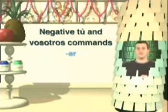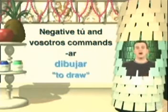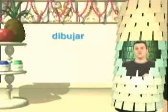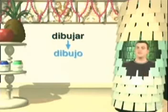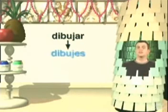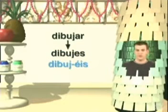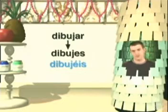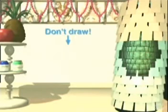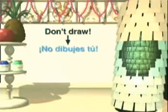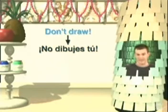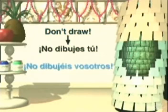Here's how you make negative tú and vosotros commands. We'll start with AR verbs, using dibujar, which means to draw. First we take the yo form: dibujo. Then we knock off the O. Lastly we add ES for the singular form: dibujes, and an accented ÉIS for the plural form: dibujéis. So to tell someone not to draw, you'd say no dibujes tú, and to tell a bunch of people not to draw, you'd say no dibujéis vosotros.